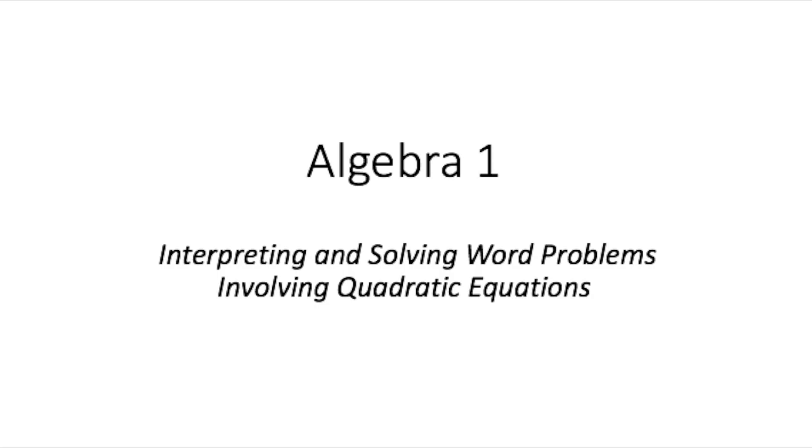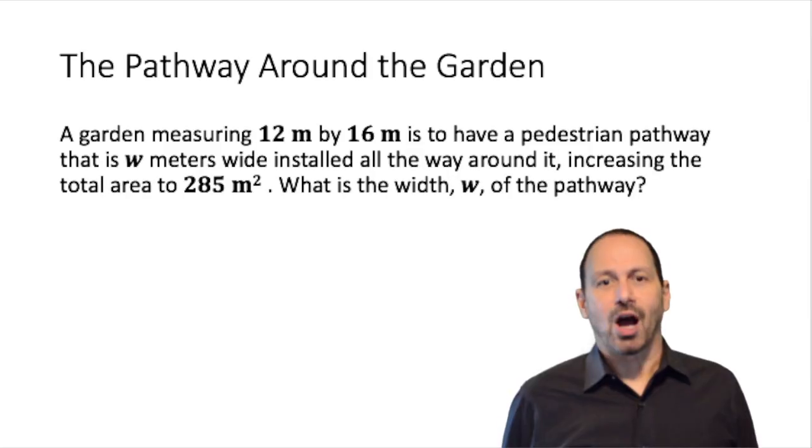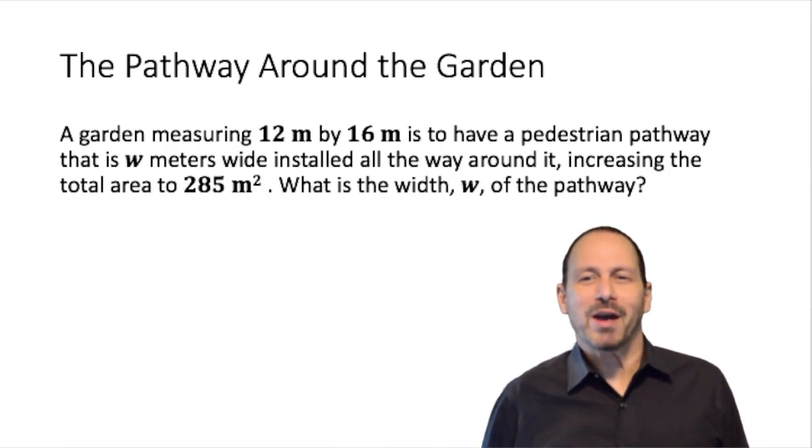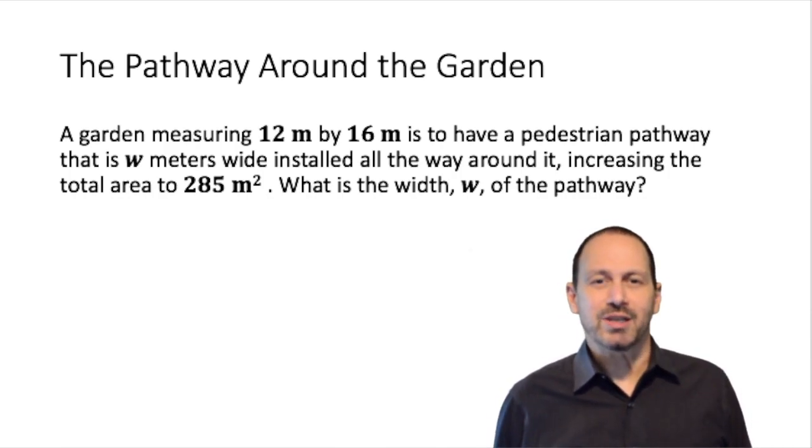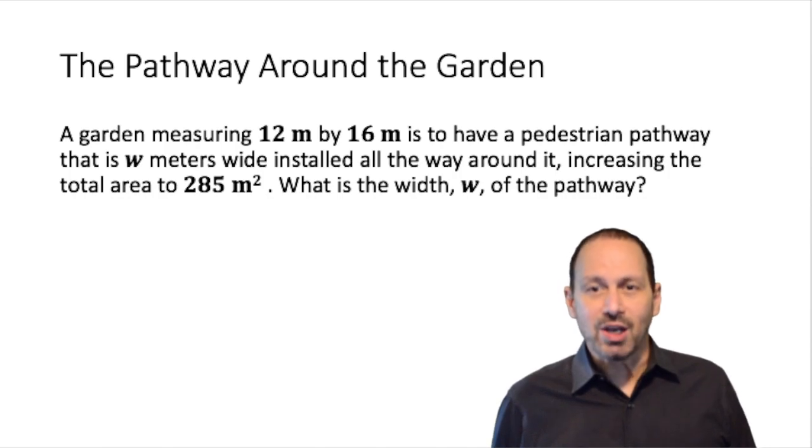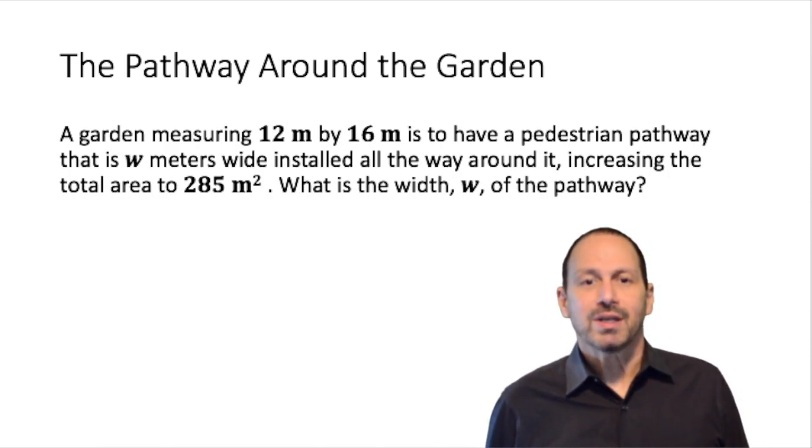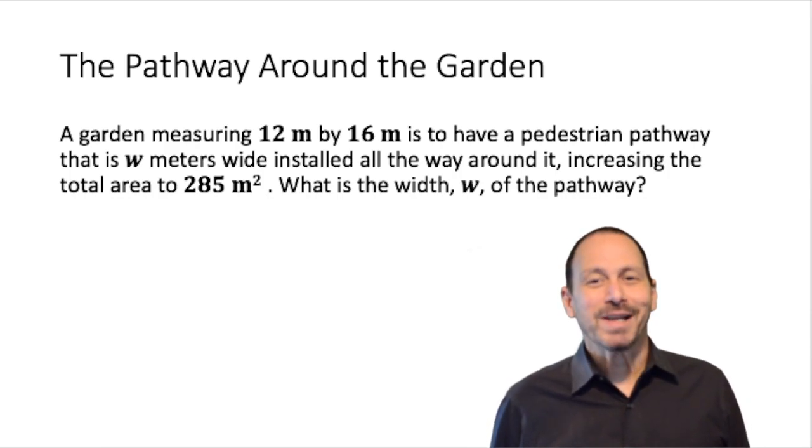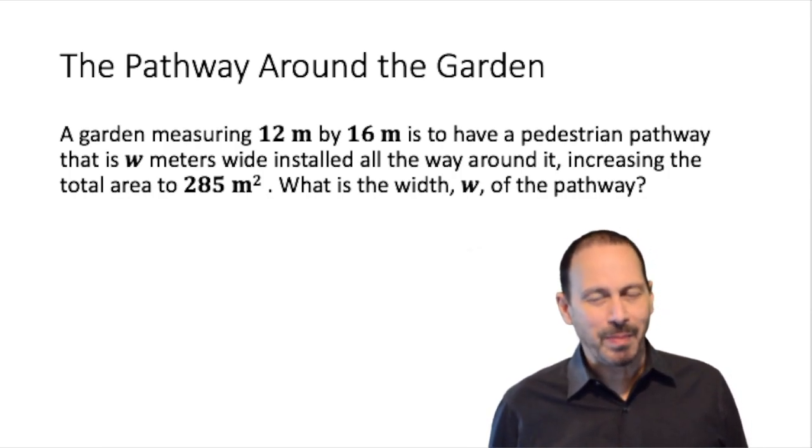Interpreting and solving word problems that involve quadratic equations. A garden measuring 12 meters by 16 meters is to have a pedestrian pathway that is W meters wide installed all the way around it, increasing the total area to 285 meters squared. What is the width of the pathway?